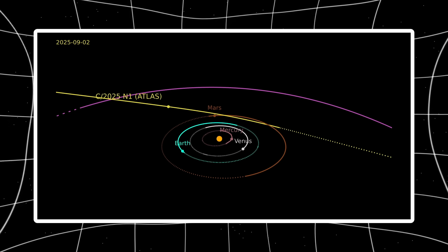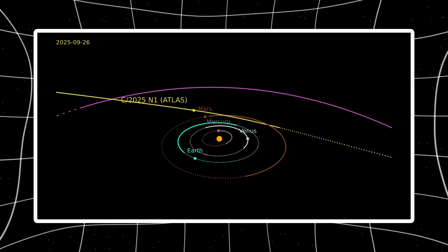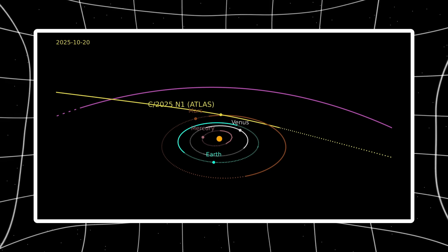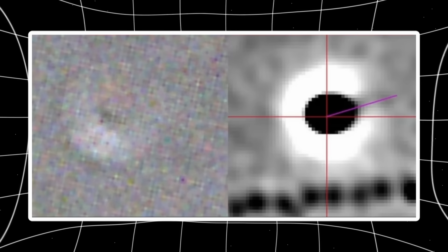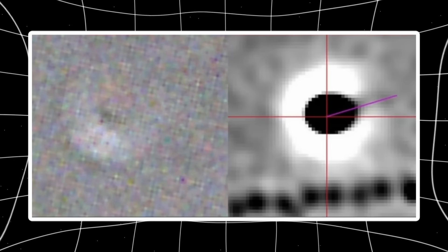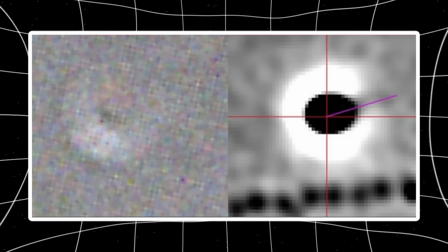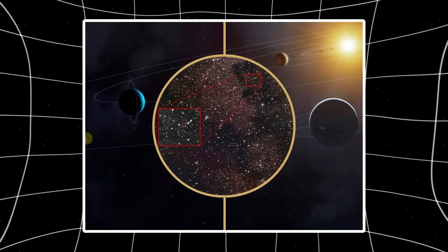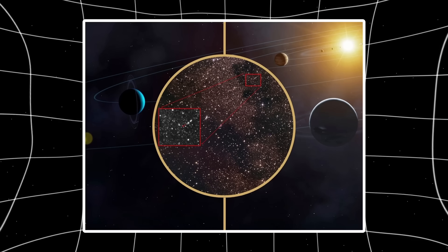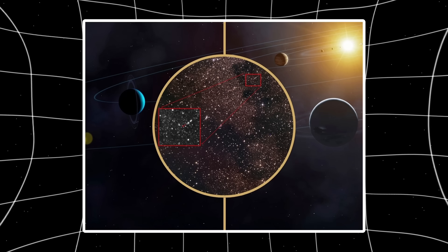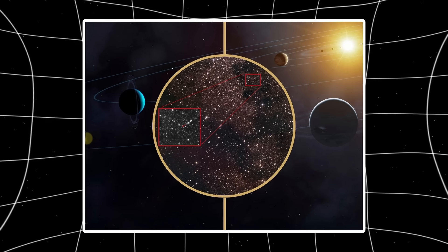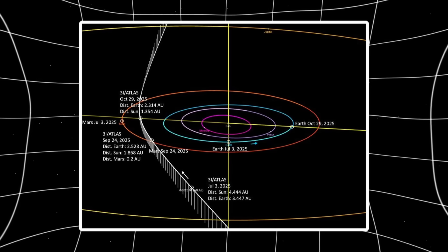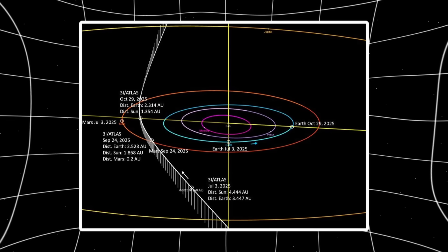After perihelion, the closest approach to the sun, the object showed non-gravitational acceleration. Not unusual by itself. Comets experience this when solar heating vaporizes surface ice, releasing jets of gas that act like tiny thrusters. But these jets normally fire chaotically. Comets twist, spin, wobble. Their outgassing creates uneven motion that rarely forms clean patterns. The thrust directions cancel out. The path becomes noisy, unpredictable.